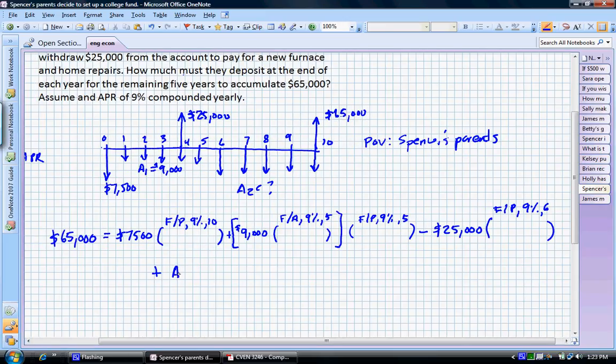And then finally we have to add this A2 whatever that is and we're going to convert that by using the F/A factor at 9% and that series occurs for five years. Note that we don't have to convert it any further because that series ends at the time period when we want to withdraw for Spencer's college education.